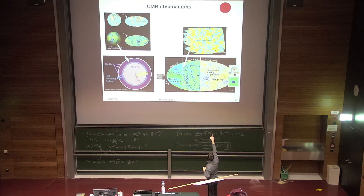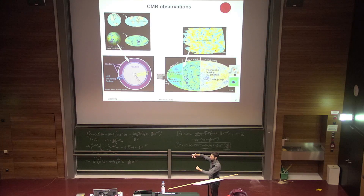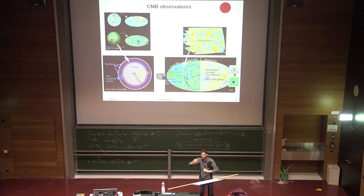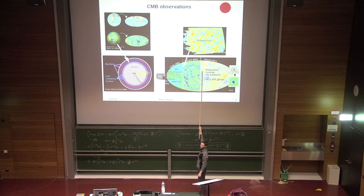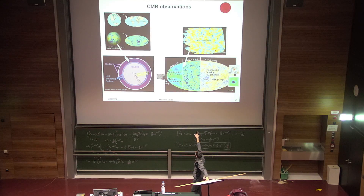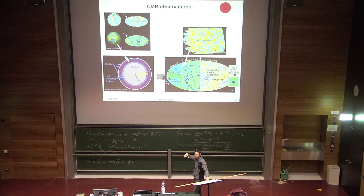This experiment was Italian, called Boomerang. In its flight — about a month orbiting around the North Pole — it made a small map, not full sky but a patch, with much higher resolution than COBE. The resolution was high enough to allow cosmological measurements, for example of Omega — good enough to say the universe is flat.